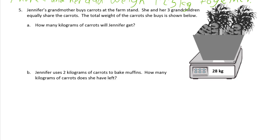Jennifer's grandmother buys carrots from the farm stand. She and her grandchildren equally share the carrots. The total weight of the carrots she buys is shown below. So here's how much all the carrots weigh, 28 kg. How many grams of carrots will Jennifer get? So we've got she and her three grandchildren. You can't just look at the numbers here, you have to read all the words. That means there's four people sharing all the carrots. So 28 is a pretty manageable number.